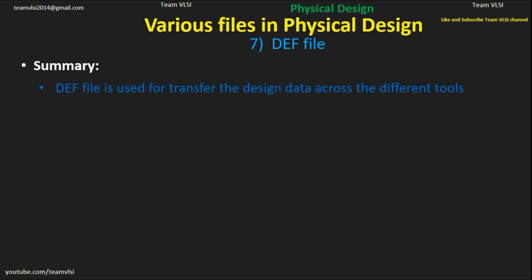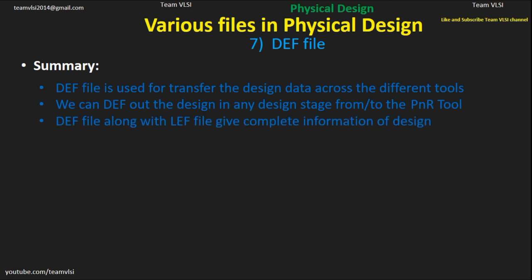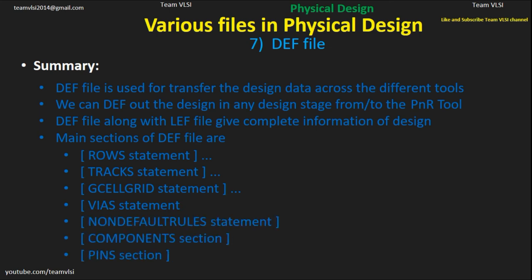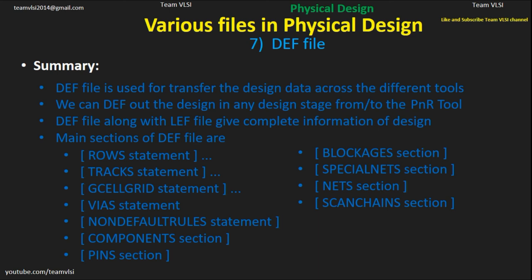To summarize: the DEF file is used to transfer design data across different tools. We can export the design at any stage to or from the P&R tool. The DEF file along with the LEF file gives complete information of the design. Main sections in the DEF file are: row statement, track statement, GCell grids, VIA statement, non-default rules, component section, pin section, blockage section, special net section, net section, scan chain section, group section, and end of design.